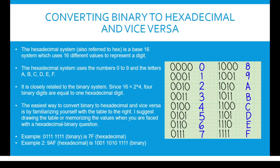Converting binary to hexadecimal and vice versa is very simple as long as you familiarize yourself with the conversion values. First, let's understand what hexadecimal is. The hexadecimal system, also referred to as hex, is a base-16 system which uses 16 different values to represent a digit. It uses the numbers 0 to 9 and the letters A, B, C, D, E, and F. It is closely related to the binary system — since 16 is equal to 2 to the power 4, four binary digits are equal to one hexadecimal digit.